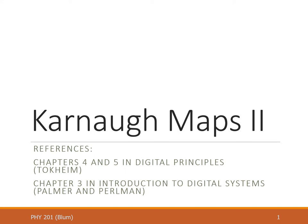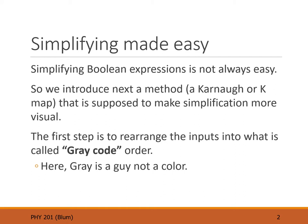We have previously seen how to write an expression for a truth table and then how to simplify that expression. Now we will look into Karnaugh maps, which are a visual means to discover simplifications. When we looked at simplification before, we saw that there were two main tricks that led to simplification.